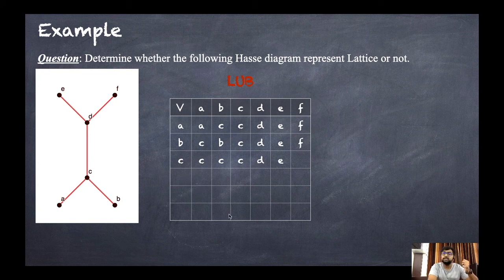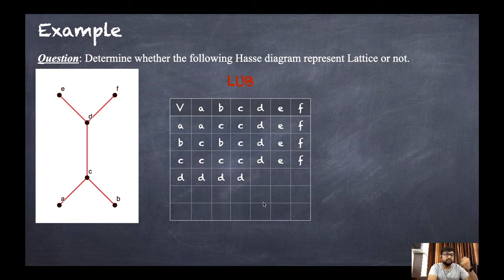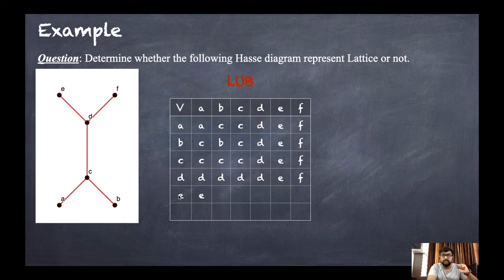For d: LUB of d and a is d, d and b is d, d and c is d, d and d is d, d and e is e, d and f is f. For e: LUB of e and a is e, e and b is e. Note that e is the highest element in the whole graph so its LUB with any element below it is e.